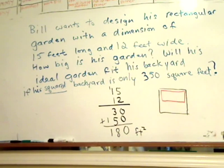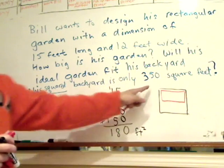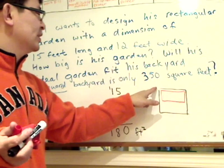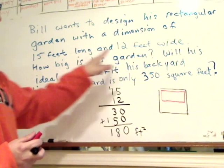The problem here is, we got an area of 350 square feet in a square area. So the question is, how long and how wide are they? Because if you have this dimension 15 by 12, would it actually fit in his square backyard?